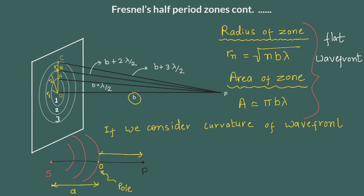So now the modified area equation is a upon a plus b into pi b lambda. Flat surface equation given above is a special case of this equation if we consider a to be infinity. We will talk more about this during problem solving videos.